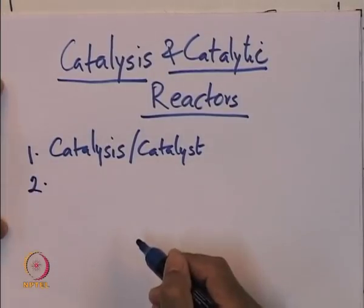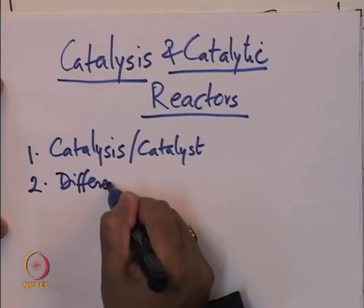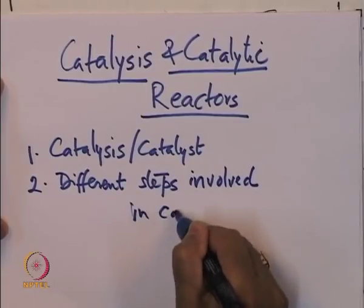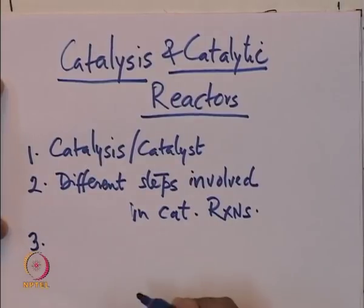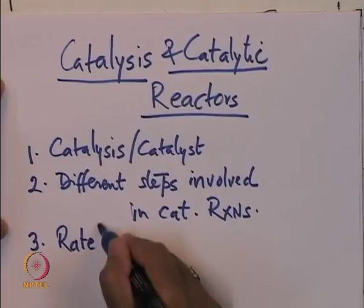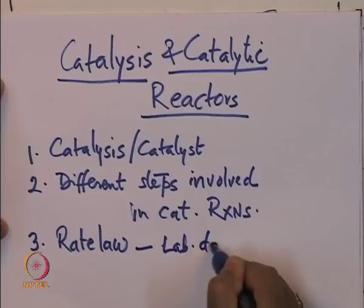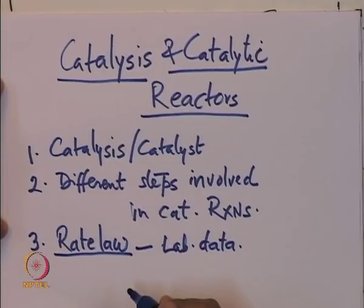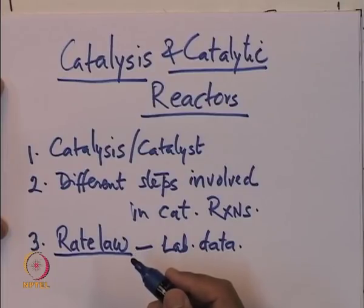Then we cover the different steps involved in catalysis when a reaction takes place on the catalyst, and the rate law from laboratory data. The rate law will be different if you are using a catalyst — a normal expression is R = −K·C_A, whereas in the case of a catalytic reaction there are so many steps taking place while the reaction is happening, so the rate law has a different form. You are going to spend some time understanding what kind of rate equation one can encounter in catalytic reactions, especially when the catalyst is solid.